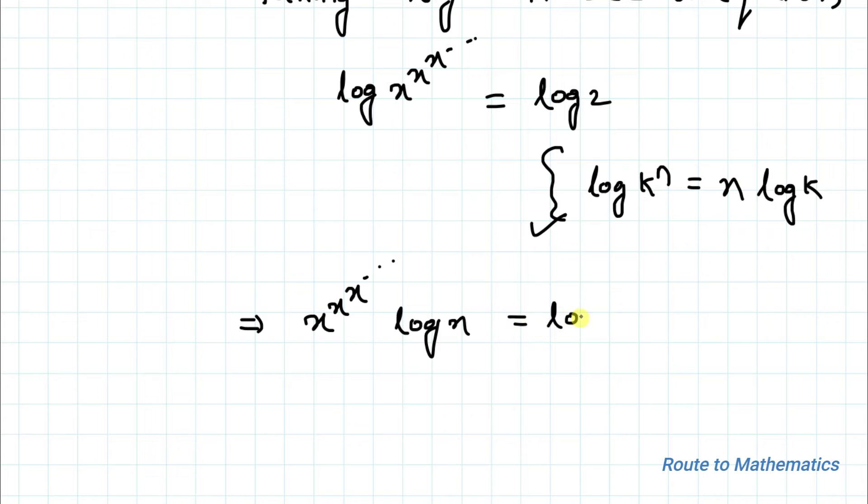From equation 1, we have x to the power x to the power x equals to 2, so let's just put the value 2 here. So we have 2 log x equals to log 2.